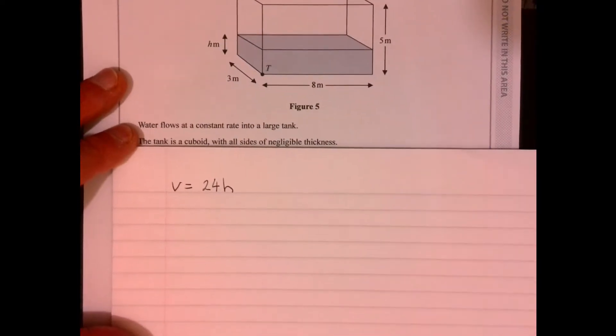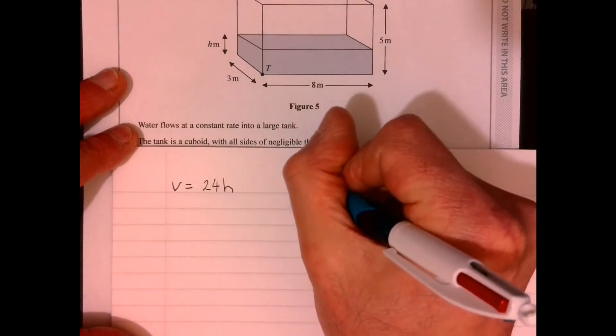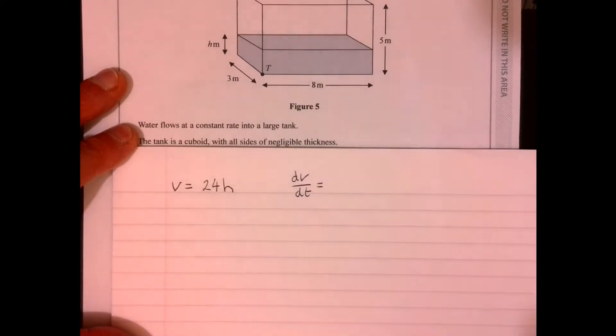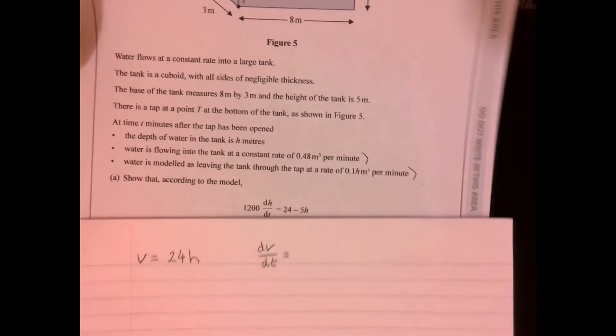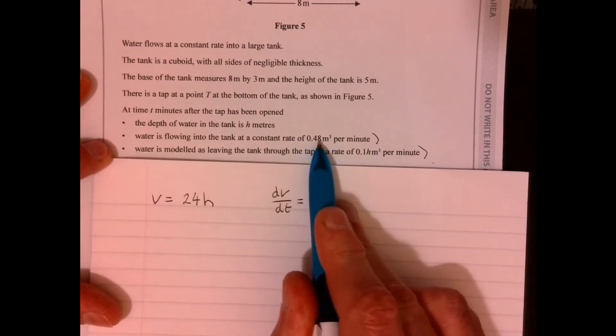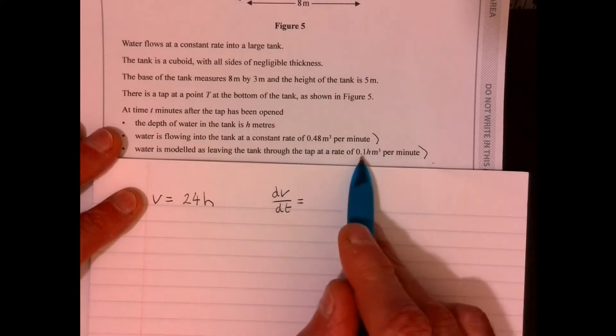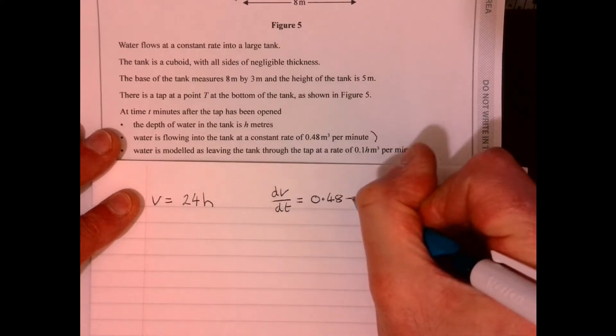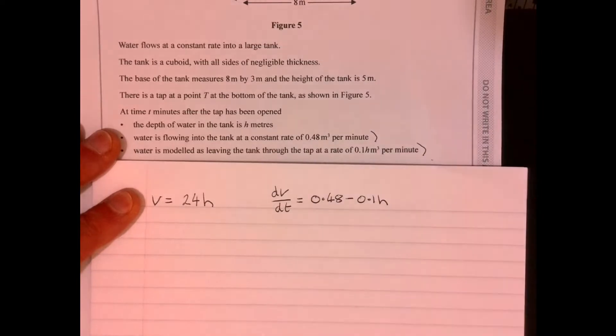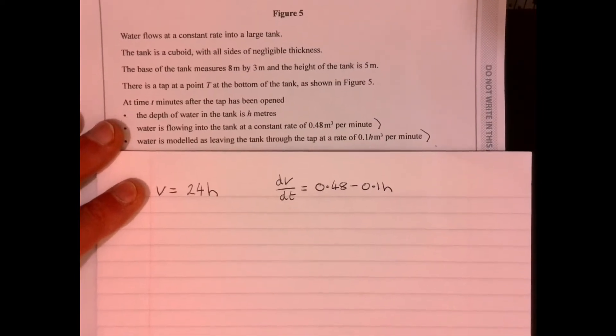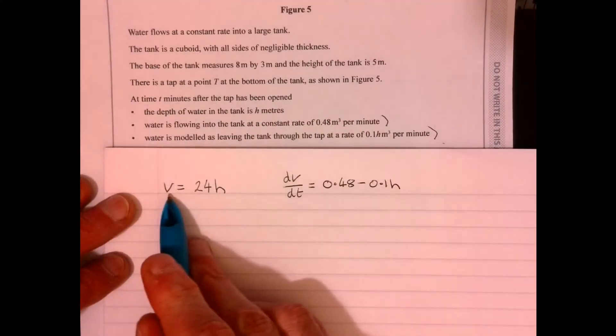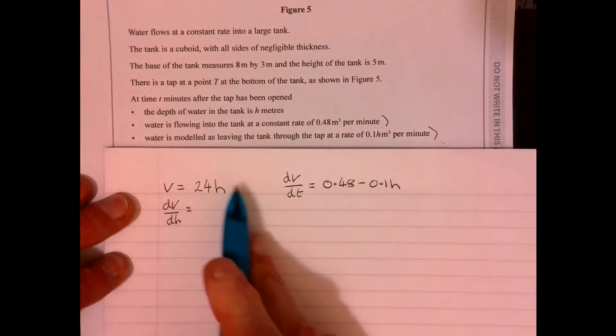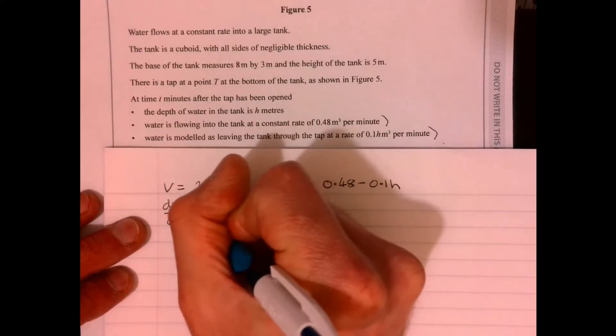Now, the other thing, now this is the bit that takes a little bit of practice in terms of writing down, is that we can write dv over dt. So this is the change in the volume over time. What does it tell us down here? Water is flowing in at 0.48 and it's flowing out like this way. So change in the volume is simply this.